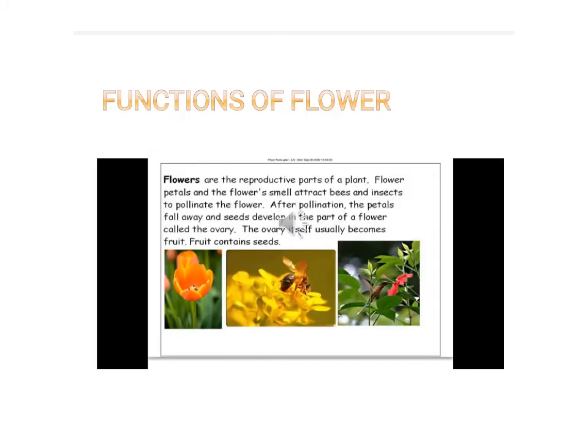The flower is the organ of reproduction which grows into fruits and seeds, which further develop into new plants. Different flowers have different colors and fragrances that attract insects for pollination. Flowers are used by humans to make perfumes and in aromatherapy for curing many diseases. We also offer flowers in temples and use them for decoration at marriages and other occasions. Dried flower buds such as clove are used as spices.